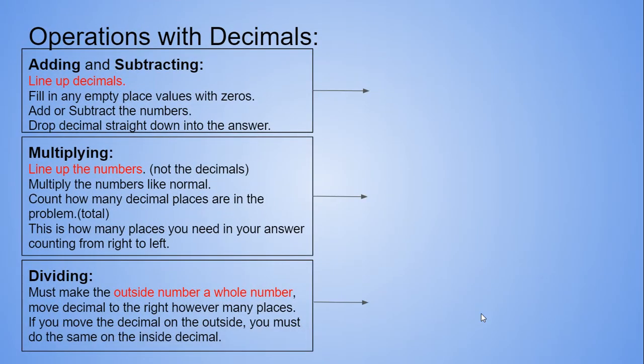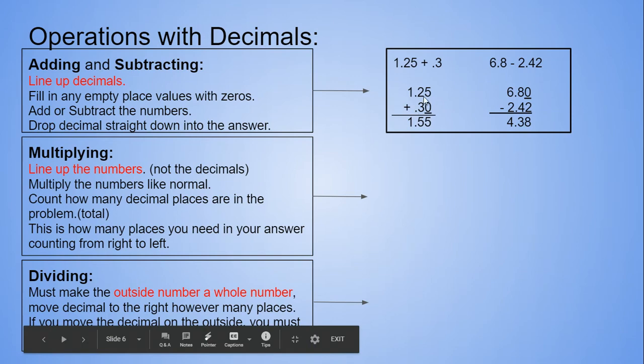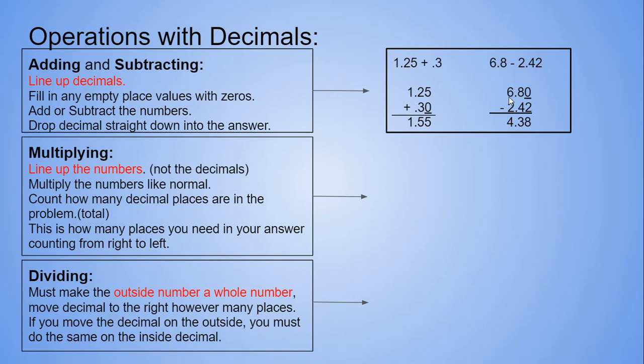For decimals, adding and subtracting decimals, you're going to line up your decimals. Fill in any empty spots with zeros. You're going to either add or subtract your numbers like normal, and then you're going to drop the decimal into your answer.